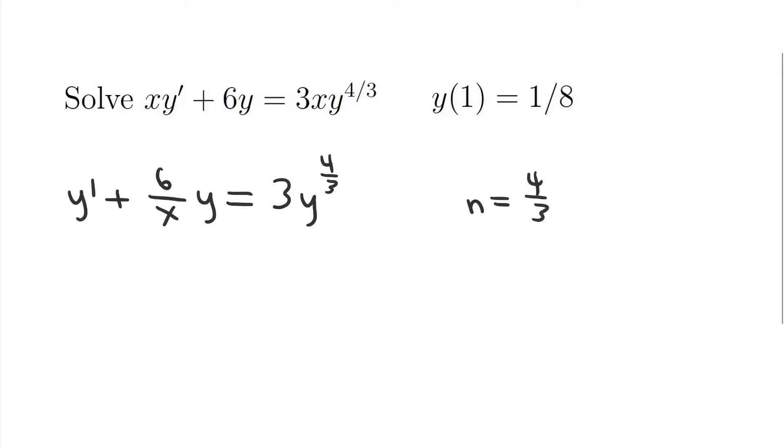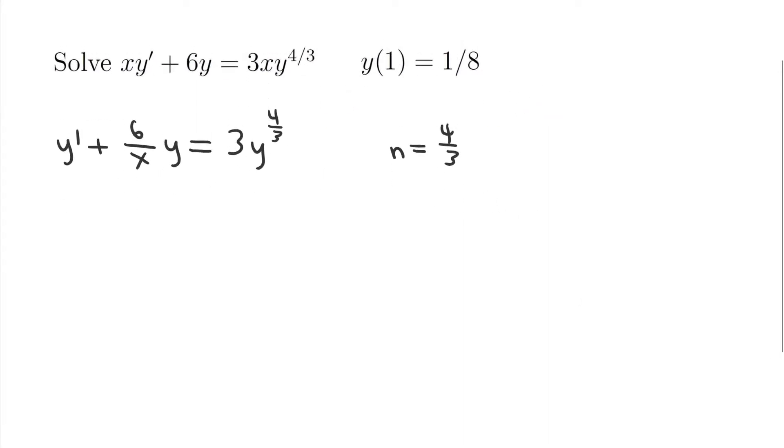And so the way we solve this, we're going to make the substitution. u is equal to y to the 1 minus n. So in this case, it's 1 minus 4 thirds or negative 1 third. Then if that's so, then the derivative of u with respect to x is going to be negative 1 third times y to the negative 4 thirds by the power rule. And then by the chain rule, we multiply by y prime.